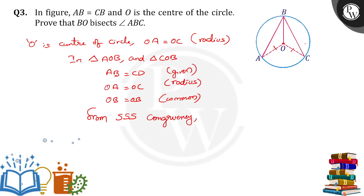From SSS congruency, triangle AOB is congruent to triangle COB.